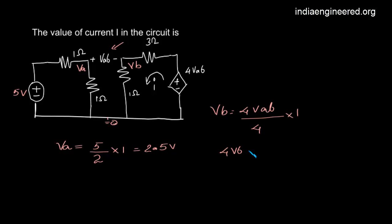That means 4*VB. This 4 and this 4 will cancel out, so VB equals VA minus VB. This gives 2*VB equals VA, and VB equals VA divided by 2, that is 1.25 volts.